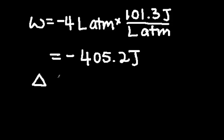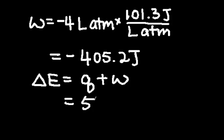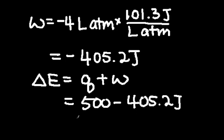Now that we have both unknowns in our original equation, we can solve for the change in internal energy, which is equal to 500 minus 405.2 joules, which gives us 94.8 joules. Notice that the work done by the system is negative. This makes sense because the system is doing work on its surroundings.